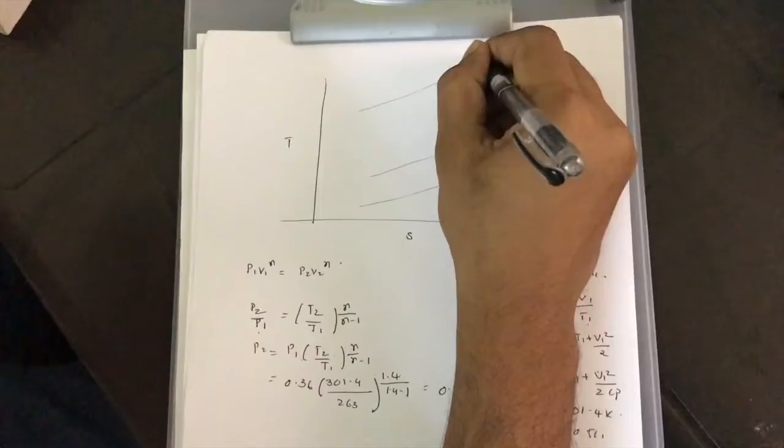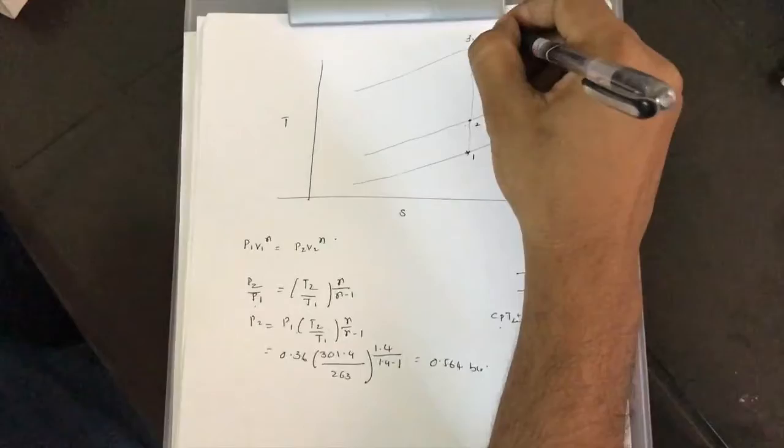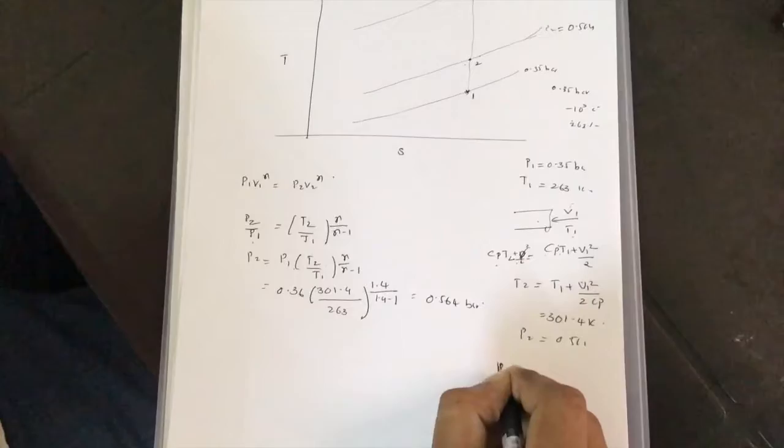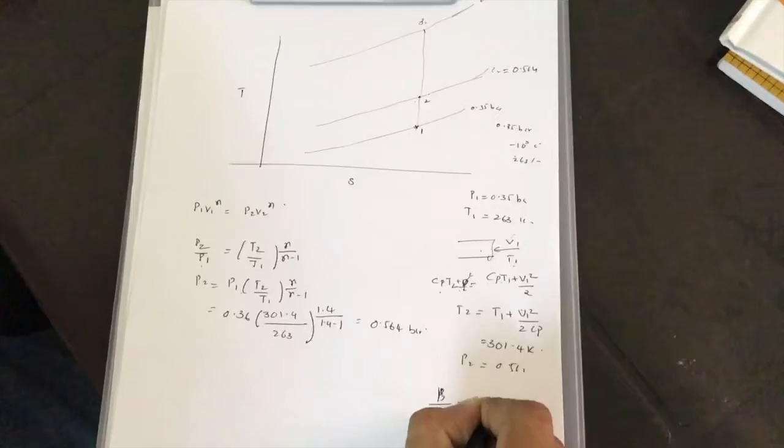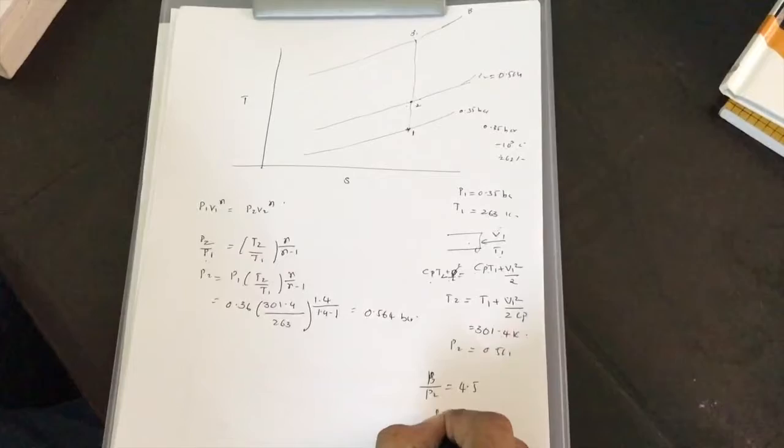In the compression process, the compression reaches Point 3. The pressure ratio P3/P2 — that is, the pressure after compression divided by pressure before compression — equals 4.5.